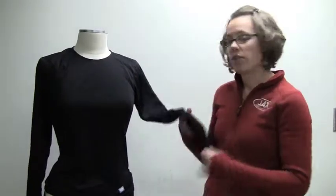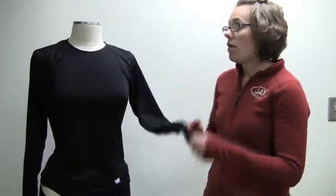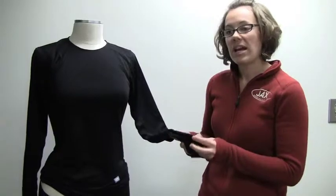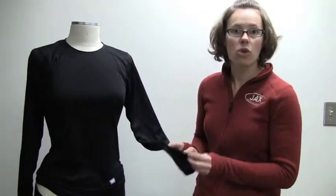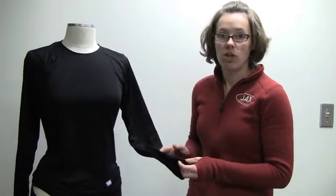You have to consider how hard your body is going to be working. The higher the aerobic activity, the thinner you can go on the base layer garment, because your body is going to be producing so much body heat that the main purpose of this base layer is not necessarily to insulate you—because your body is already going to be quite warm—it's to wick the moisture away from your body so you're not getting wet from the sweat you're producing from that activity.